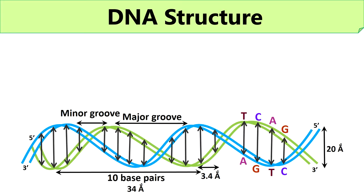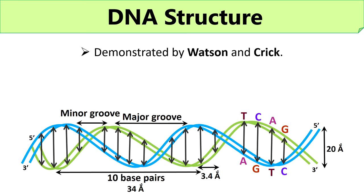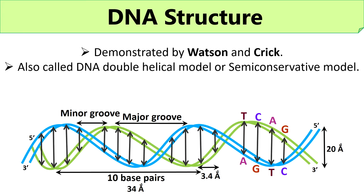Let us discuss the structure of DNA that was given by the scientists Watson and Crick. Watson and Crick displayed the structure of DNA after studying the manuscript of two scientists, Linus Pauling and Corey. Linus and Corey demonstrated a 3D structure of the nucleic acid which didn't gain much attention. Then in early 1953, Watson and Crick studied the physical and chemical properties of DNA and proposed a double helical model of DNA, which is sometimes called the semi-conservative model, in which two daughter molecules conserve one parental or old strand and one new strand.